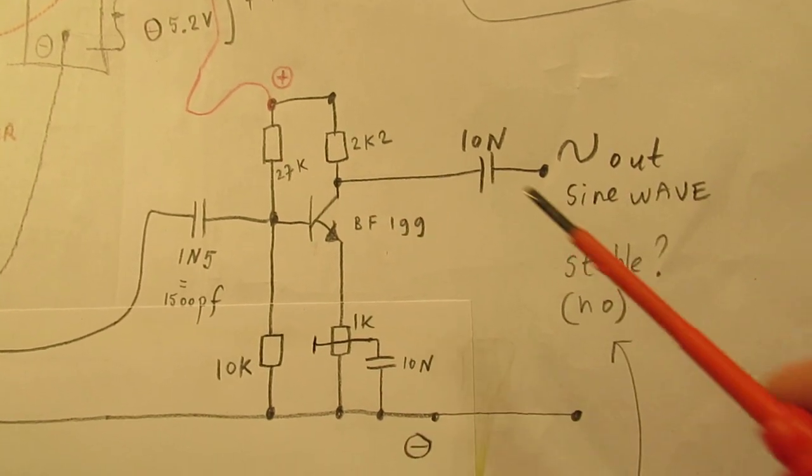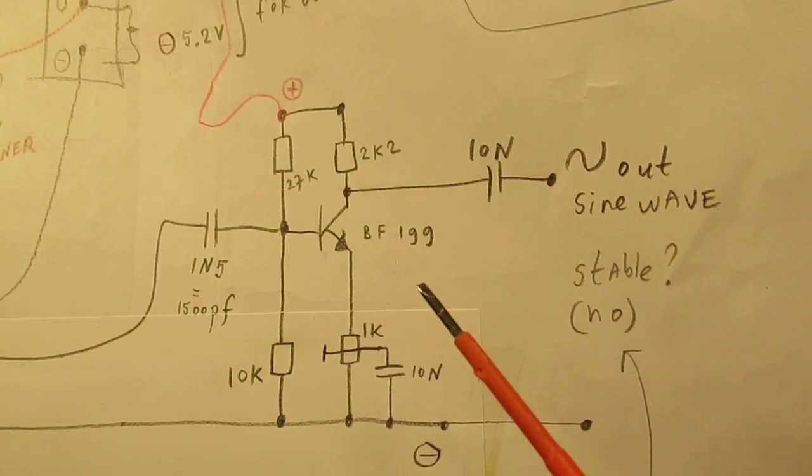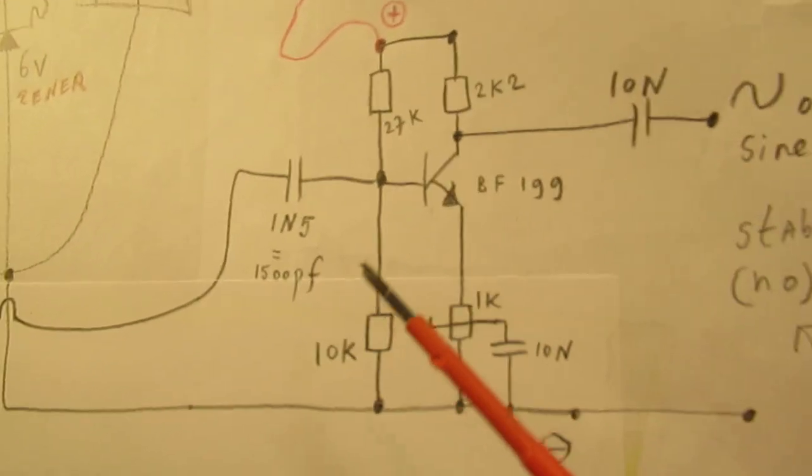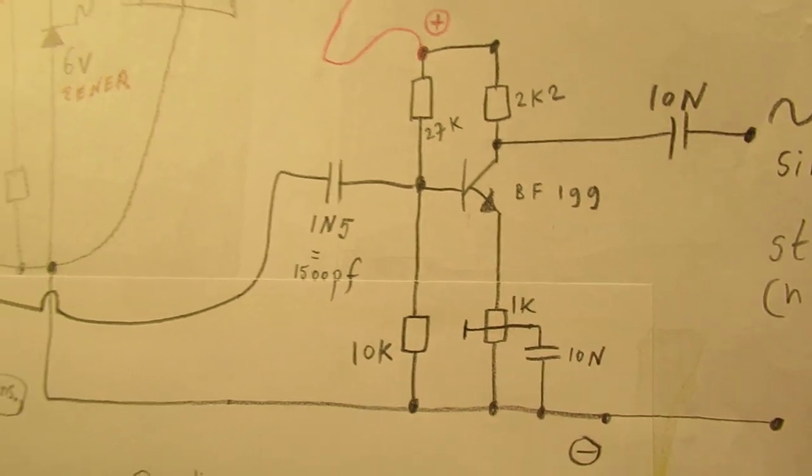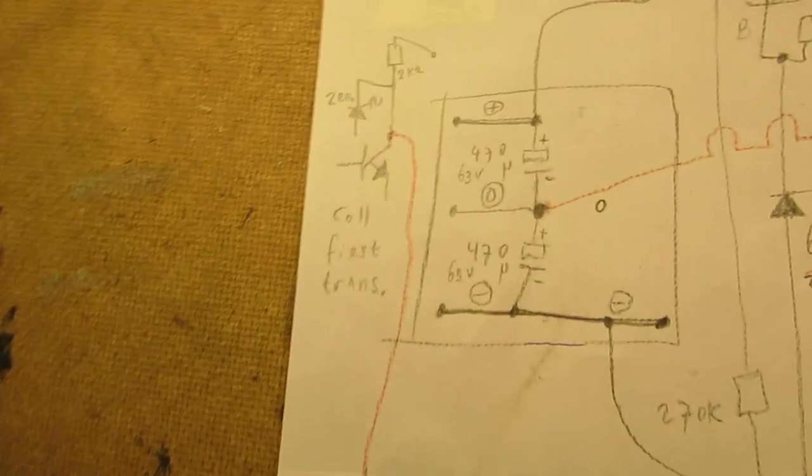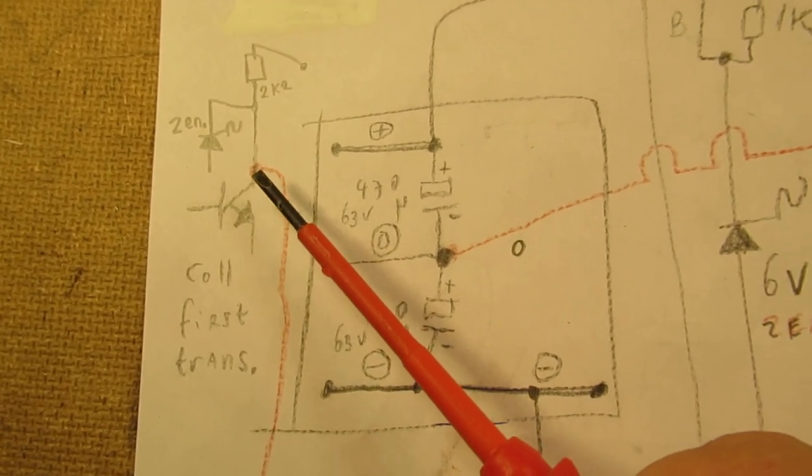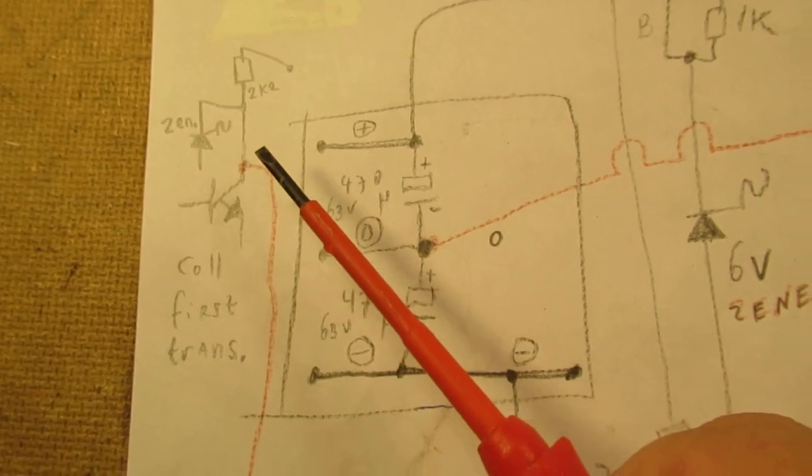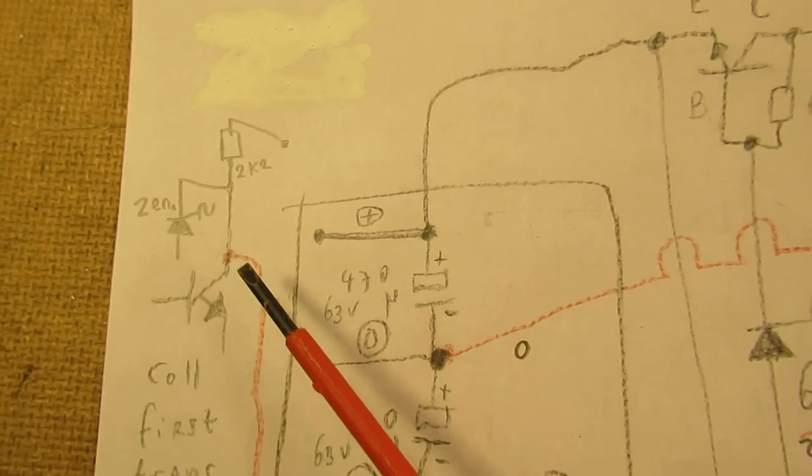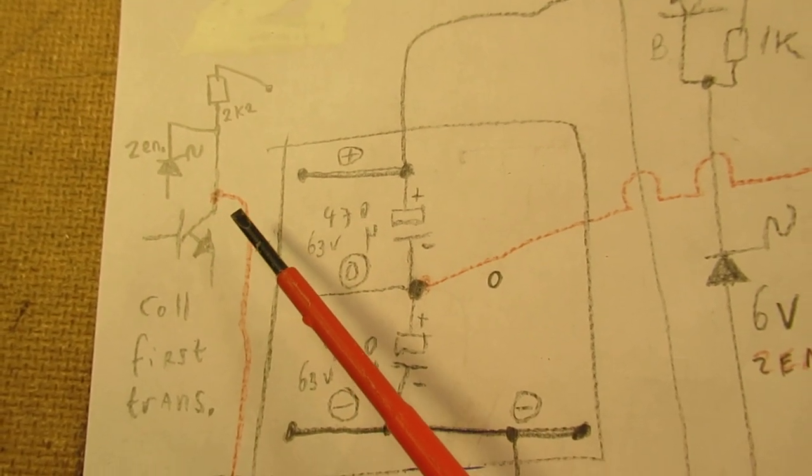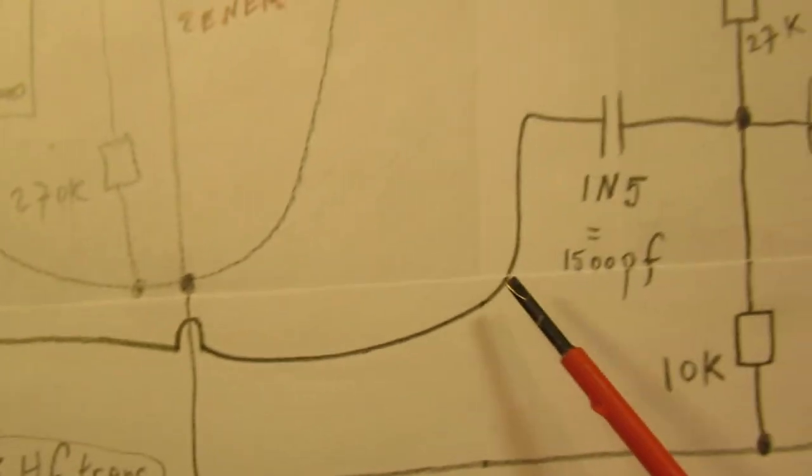And this is an amplifier. And that amplifier was connected, hooked up via a 1N5 capacitor. So 1500 picofarad to the first transistor of the oscillator. That's in my earlier video. 2k2 zener diode. And here is that first transistor. And here we take out the signal. And it goes through this wire.